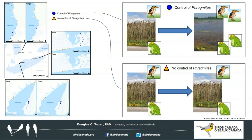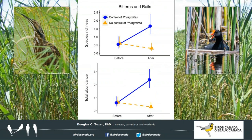We monitored all survey stations before and after control of Phragmites, regardless of whether control happened at the station or not. This allowed us to document simultaneous changes in birds and frogs unrelated to Phragmites control, such as changes in water levels. We found clear, statistically significant increases in species richness and total abundance of marsh breeding bitterns and rails of conservation concern in relation to control of invasive Phragmites — an increase of about one species and about two individuals with control, shown by the uptick in the blue line compared to the orange line.